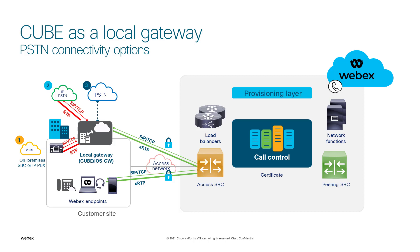When a local gateway is deployed, the customer can access PSTN through their on-prem UCM as seen in option 1, as a provider as seen in option 2, or a TDM PSTN connection as seen in option 3. Cloud PSTN options are not included in this slide since we're discussing the possible call flows through the local gateway.